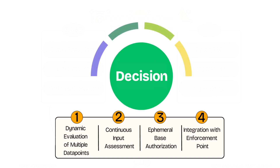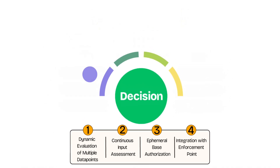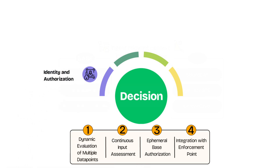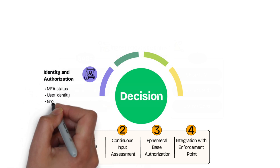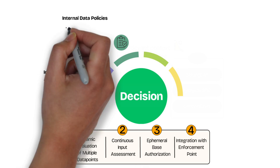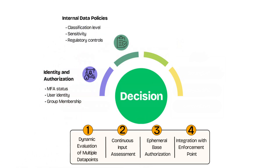At a minimum, the decision point must integrate with identity providers, which supply key authentication context such as multi-factor authentication status, user identity, and group membership. The decision point should also account for data access policies, which define the type of data a user is allowed to access based on factors like classification levels, sensitivity, and other regulatory controls.